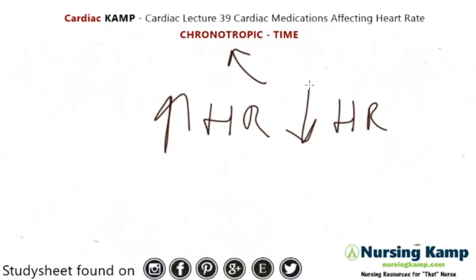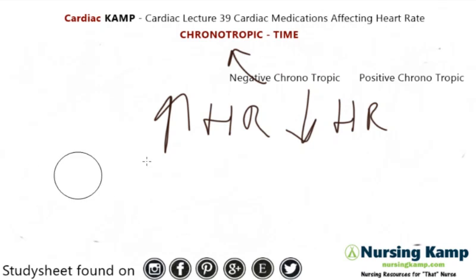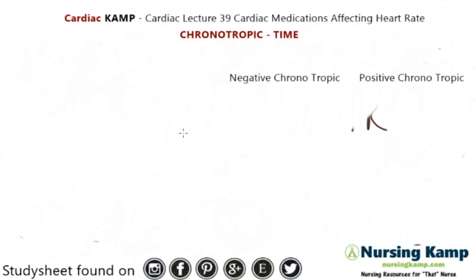So you're either going to have a negative chronotropic or a positive chronotropic. A negative chronotropic means it's going to slow down the heart rate, and a positive chronotropic means it's going to increase the heart rate.